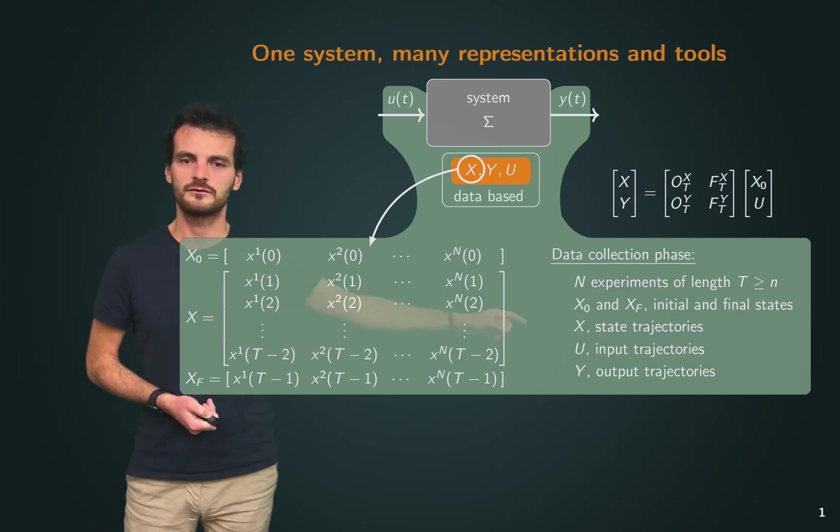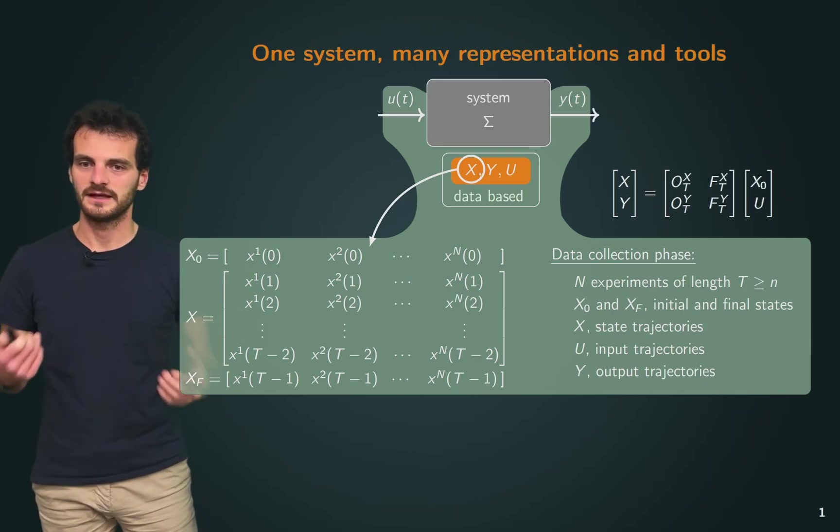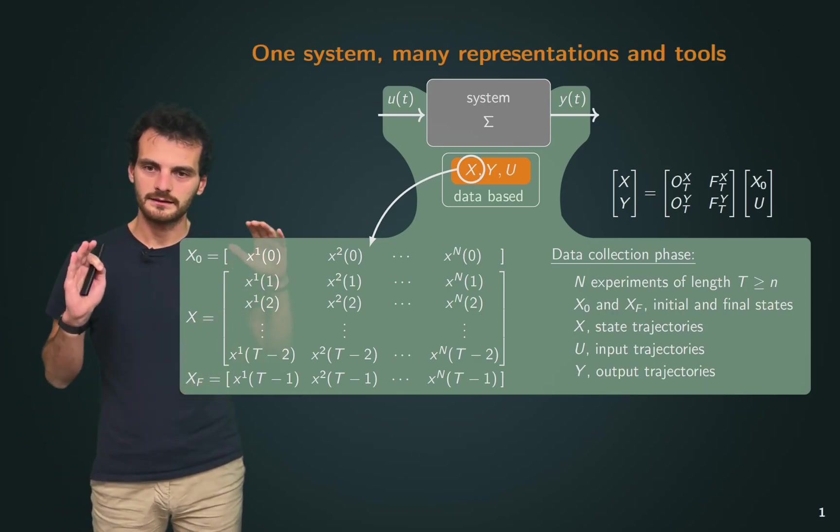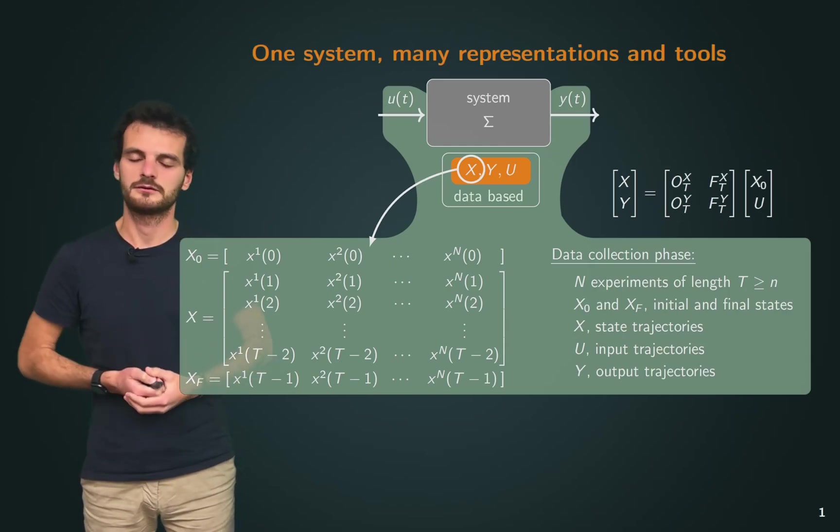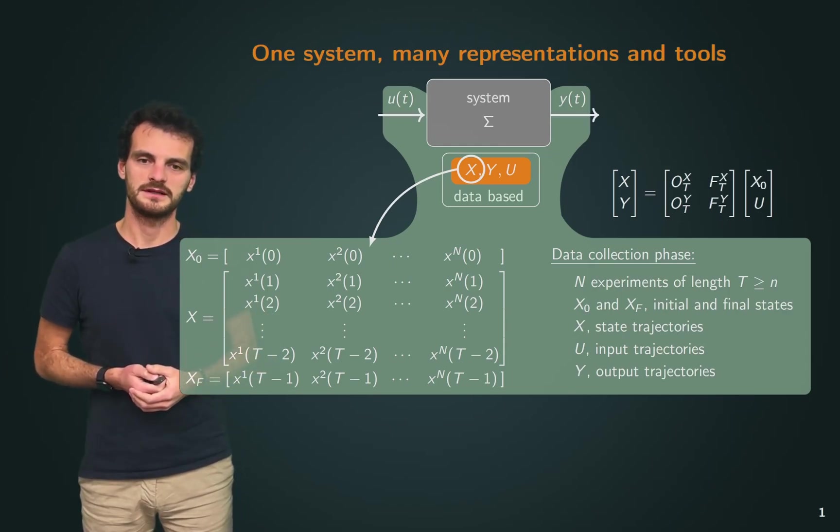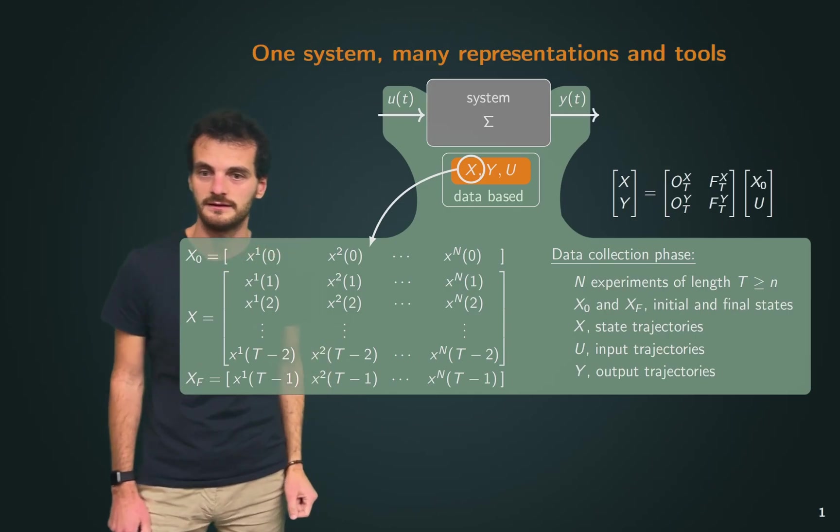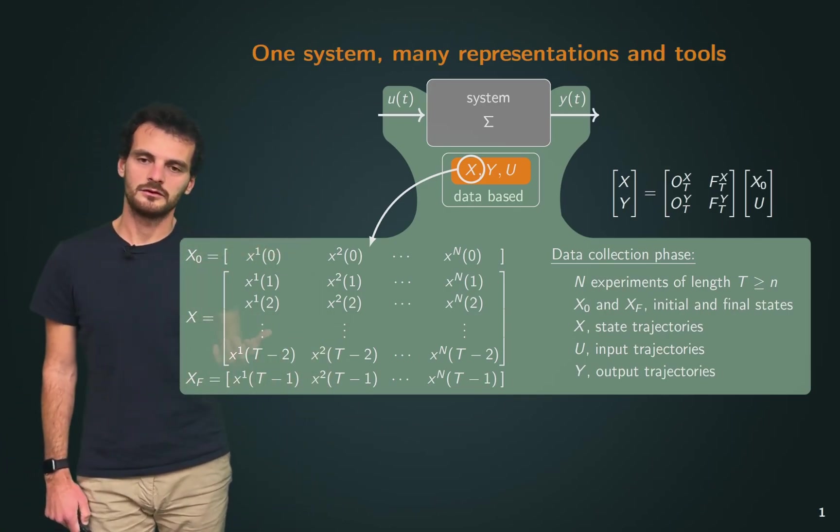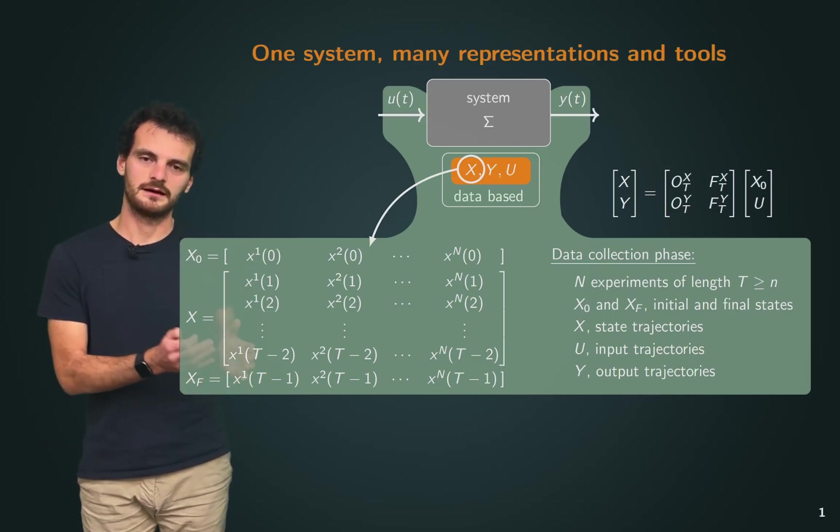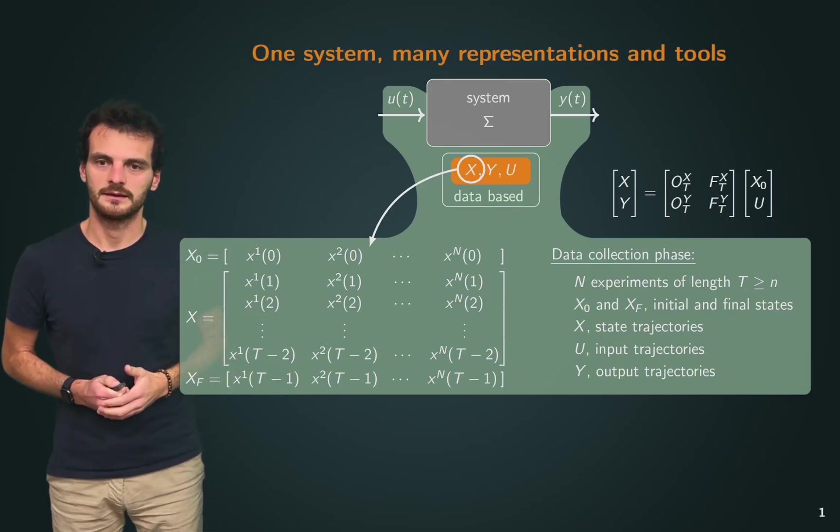In particular, we assume the collection of N, capital N, experiments of length T. We collect the input, output, and state trajectories of these experiments in matrices X, U, and Y. Also, X0 and XF collect initial and final states. We're collecting this data, and I'm going to be specific later on which kind of data we use when, since we're not always going to use all types of data.